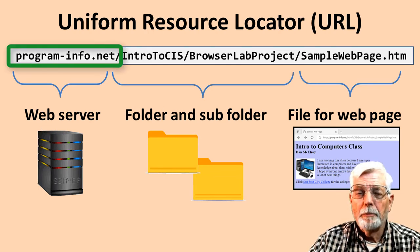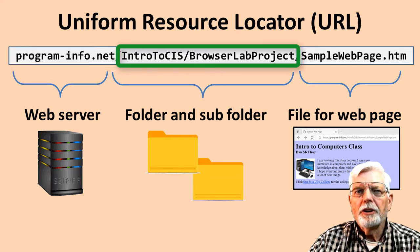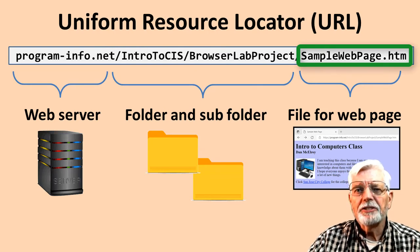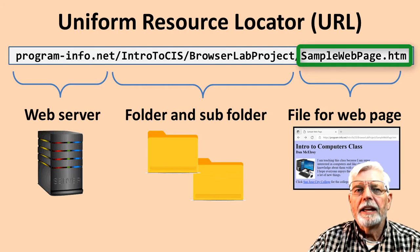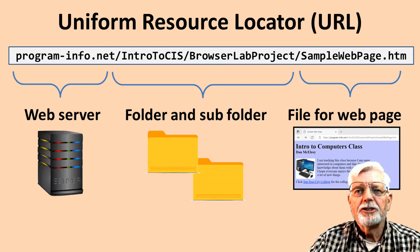The URL contains several parts. The first part is the name of the server — in this example, program-info.net. There is an optional list of folders on the web server to find the location of the web page. Lastly, the name of the web page itself — in this example, it is samplewebpage.htm. Most web pages will use .htm or .html as their file extension.